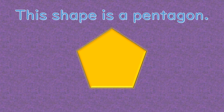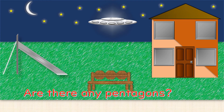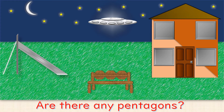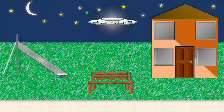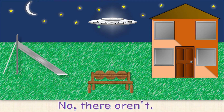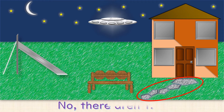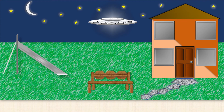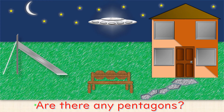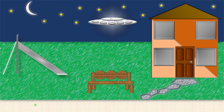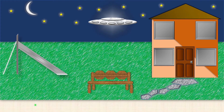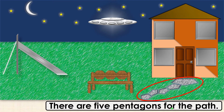This shape is a pentagon. Are there any pentagons? No, there aren't. Let's add some pentagons to the picture. Are there any pentagons? Yes, there are. There are five pentagons for the path.